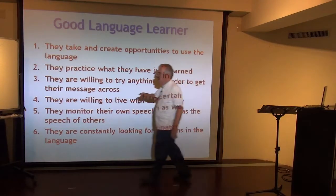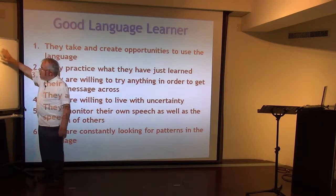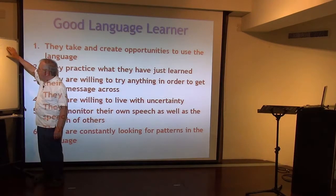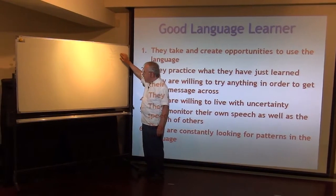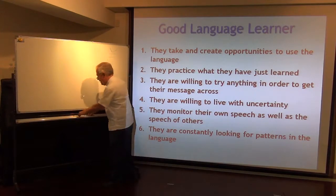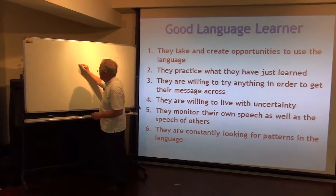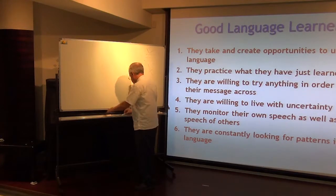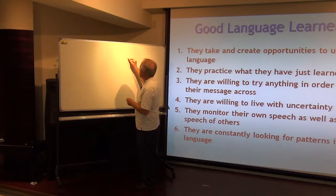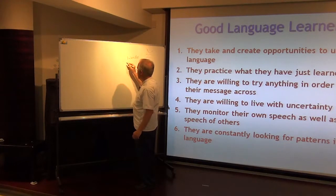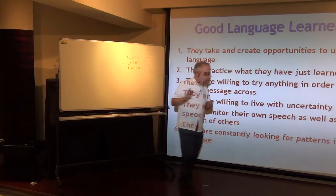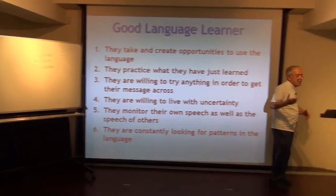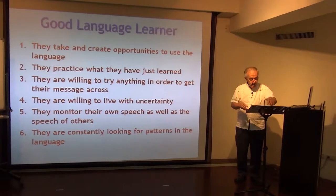Let me use an example with Chinese characters. The word for 'righteous' has a lamb on top and 'I' or 'me' on the bottom — so we can remember it as 'a lamb over me.' Another interesting example: take the word for 'electric' and add the word for 'words' and you get 'telephone'; 'electric brain' gives you 'computer'; 'electric ladder' gives you 'lift' or 'elevator.' The good language learner is always looking for such patterns, with an active mind categorising and classifying.